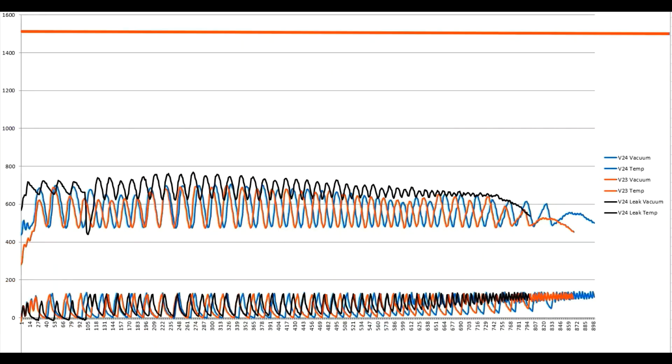This is the data for all three batches. The blue line is version 24, the red line is version 23, and the black line is version 24 with the vacuum leak.